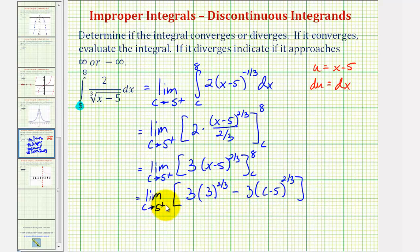And now we'll determine this one-sided limit. Notice how this first term is not affected by c at all. So we would just have three times three to the two-thirds minus, as c approaches five from the right, c minus five approaches zero. So this term approaches zero. And therefore the limit is just three times three to the two-thirds power.